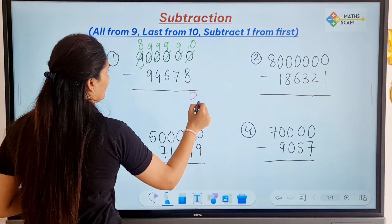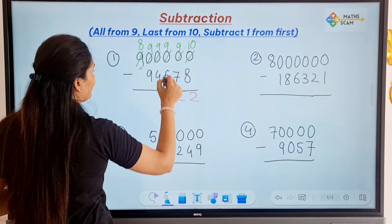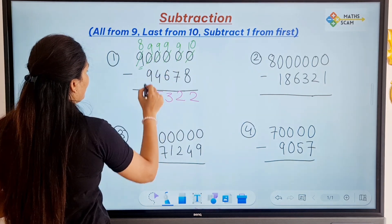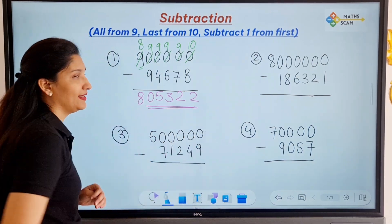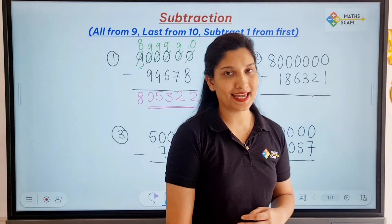10 minus 8 is 2, 9 minus 7 is 2, 9 minus 6 is 3, 9 minus 4 is 5, 9 minus 9 is 0, and 8. So we got the answer within 5 seconds. So this was our first question.